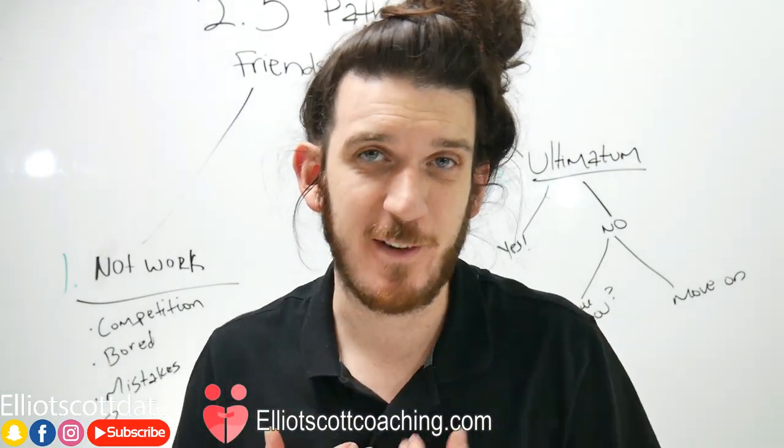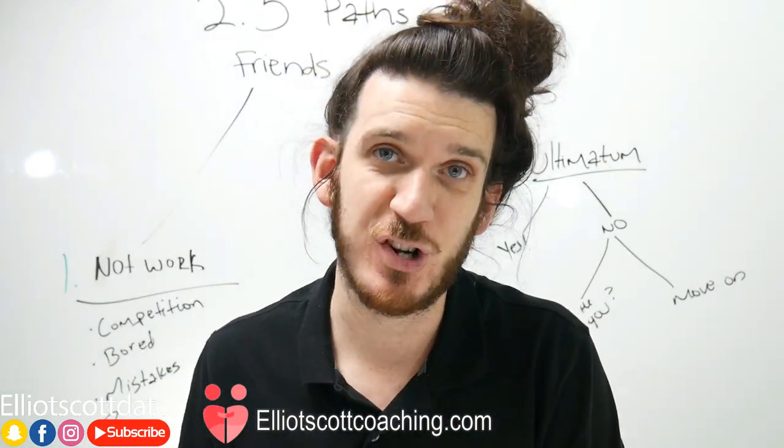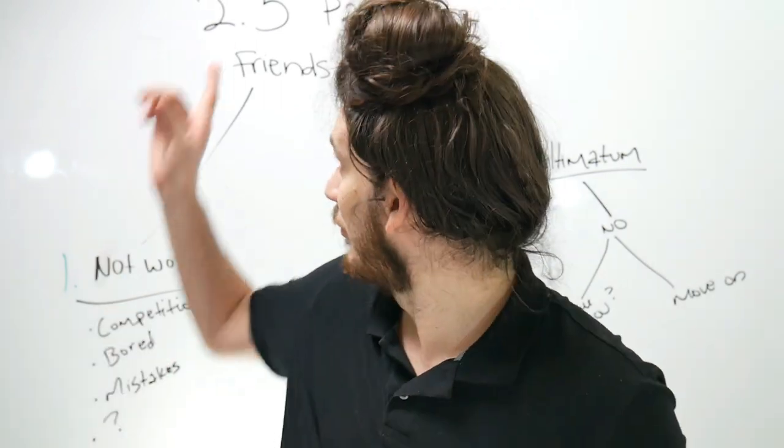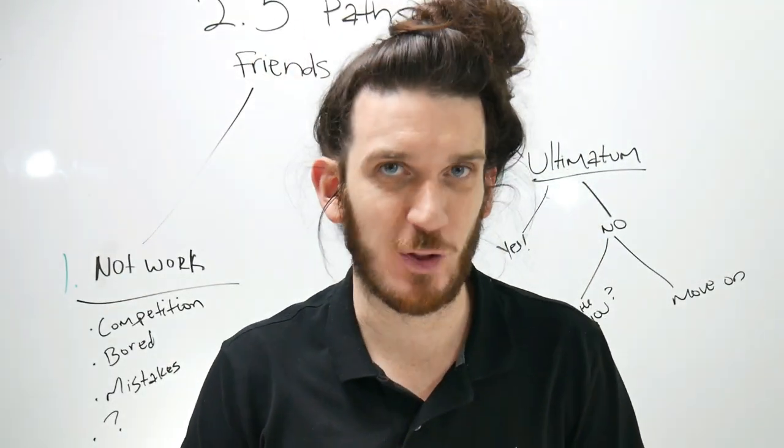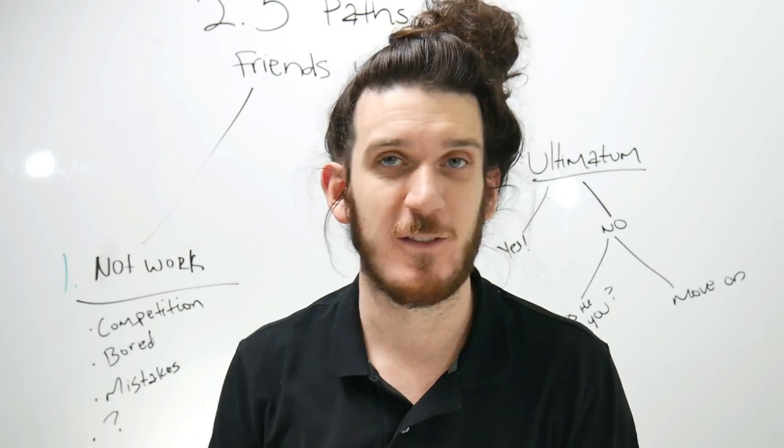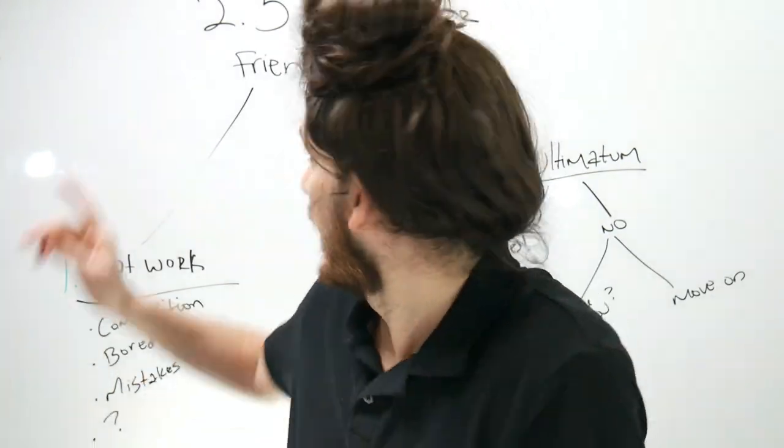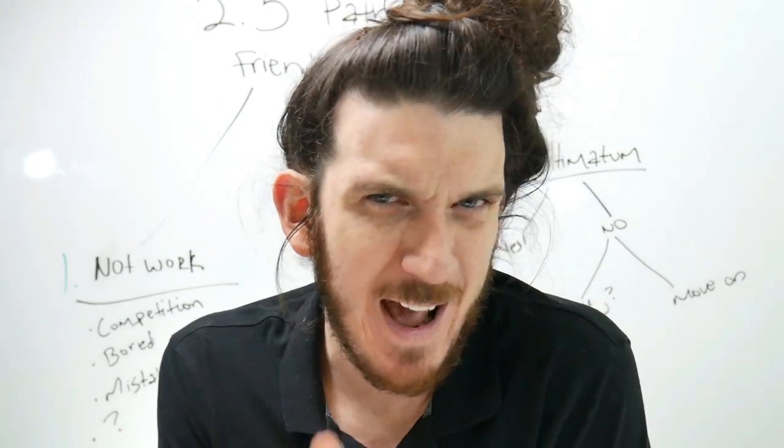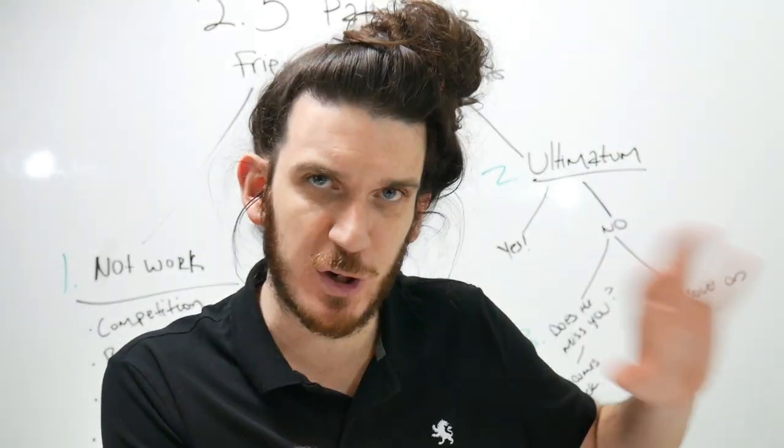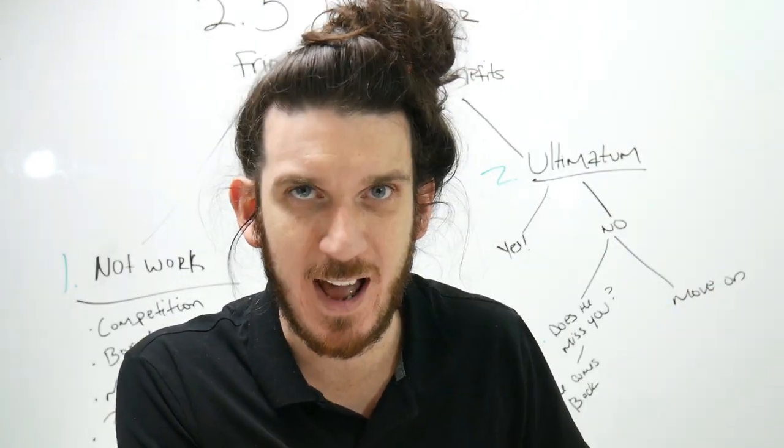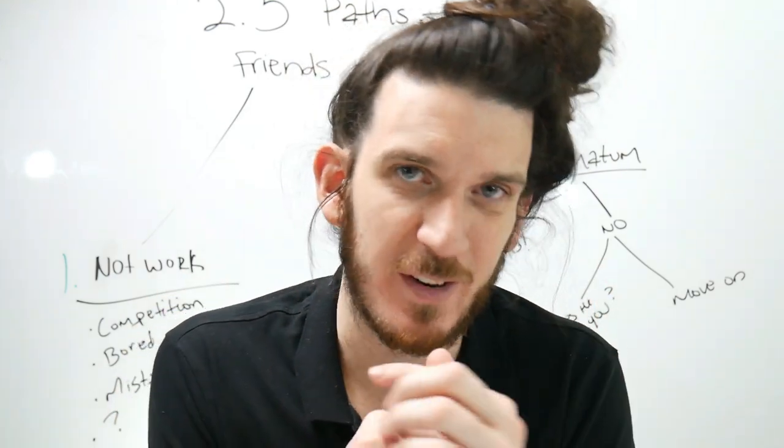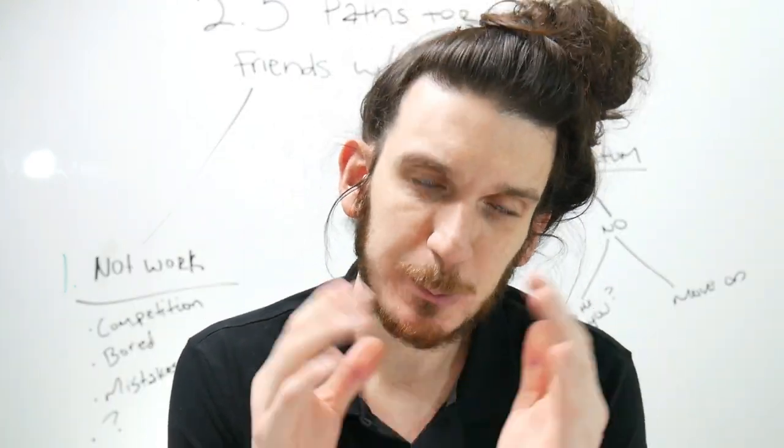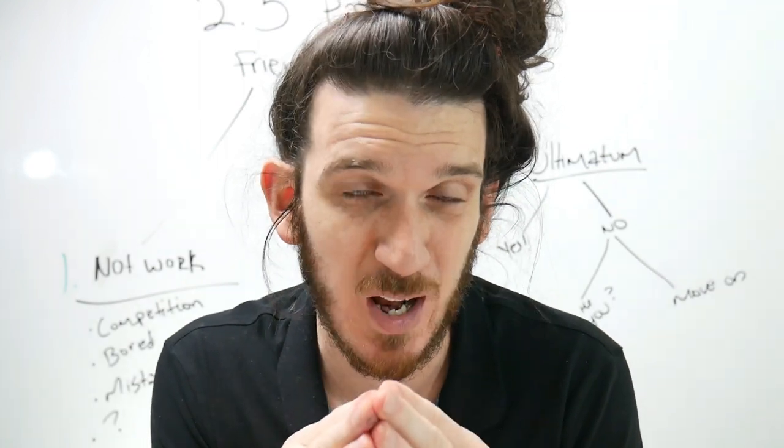What's going on everybody? It's your favorite dating coach Elliot Scott and as you can see by the title, I'm going to call this the 2.5 paths for friends and benefits. Before we get into it, if you can, please subscribe. Just click the red button below and click the little bell next to it too if you want to get my notifications immediately when I get a video out.